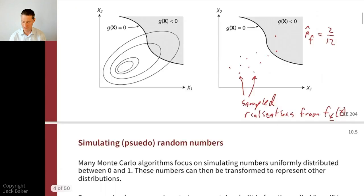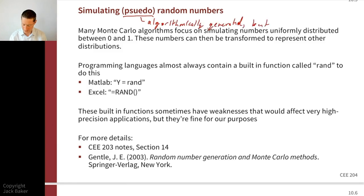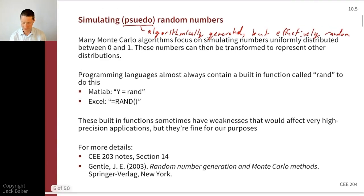Let's talk about the basics of simulating random numbers. A key concept is that we simulate pseudo-random numbers — algorithmically generated but effectively random. There is a reproducible algorithm, but especially with a random seed, they're indistinguishable from truly random numbers. We can talk more about pseudo-random numbers separately if desired.